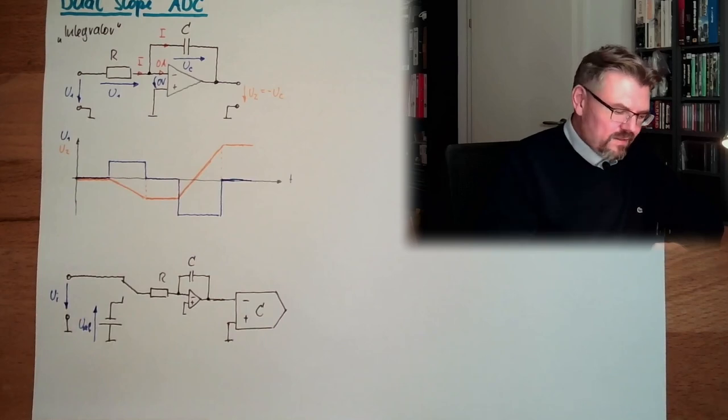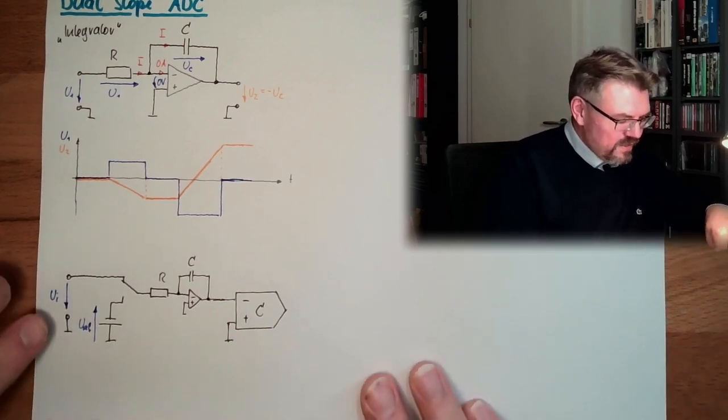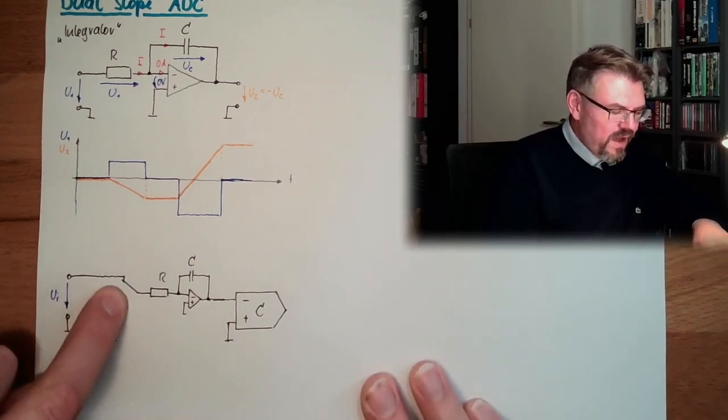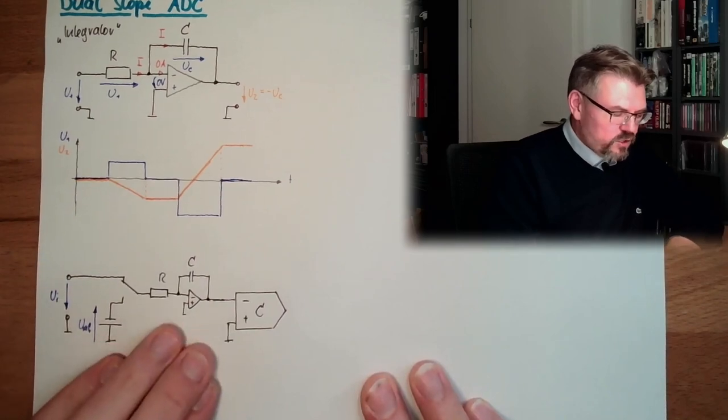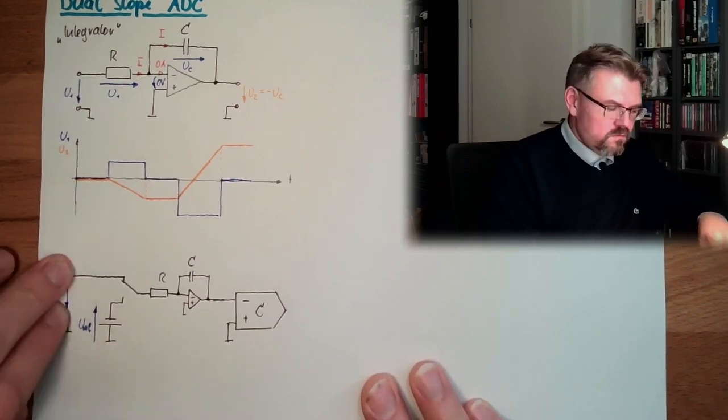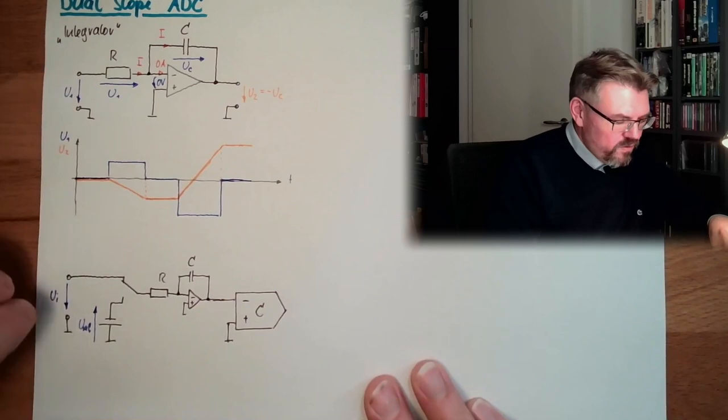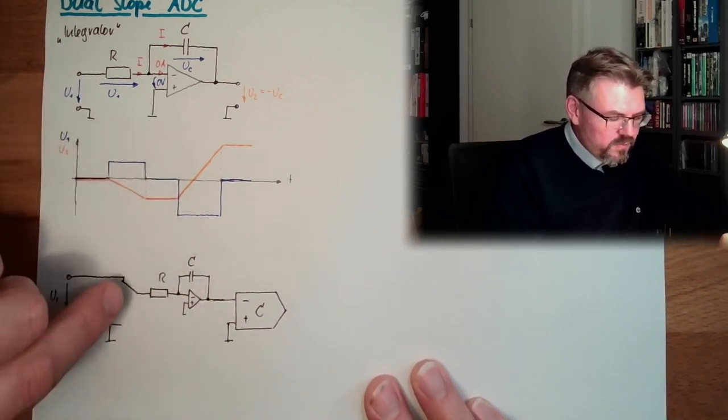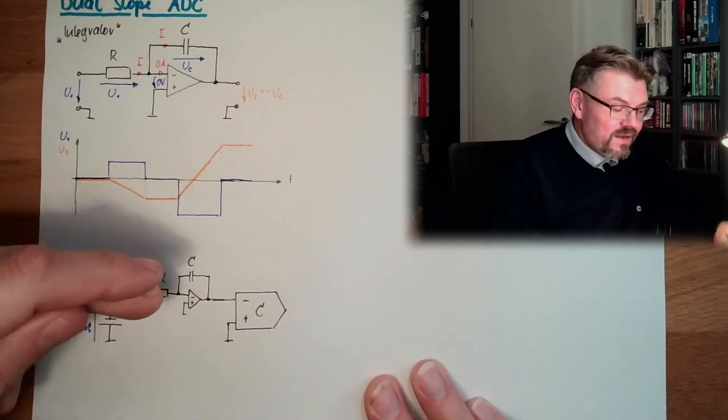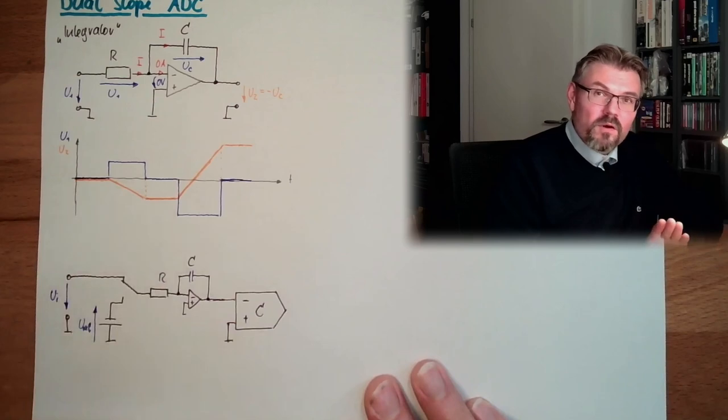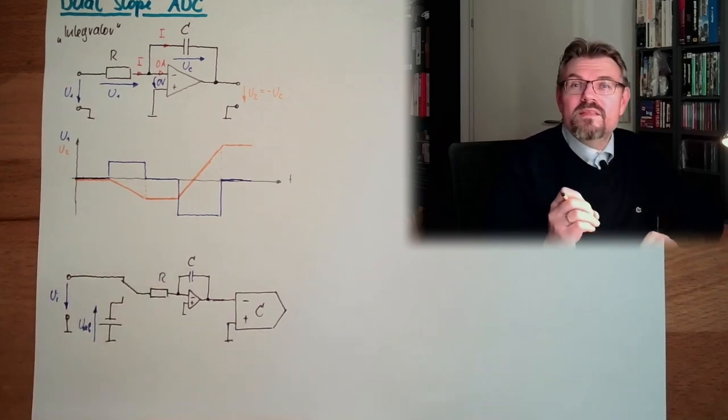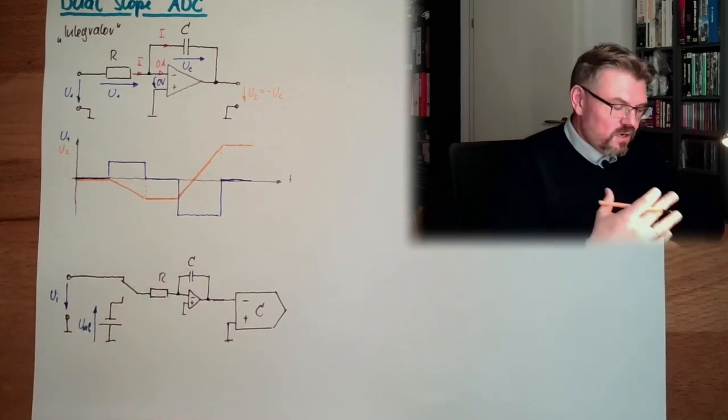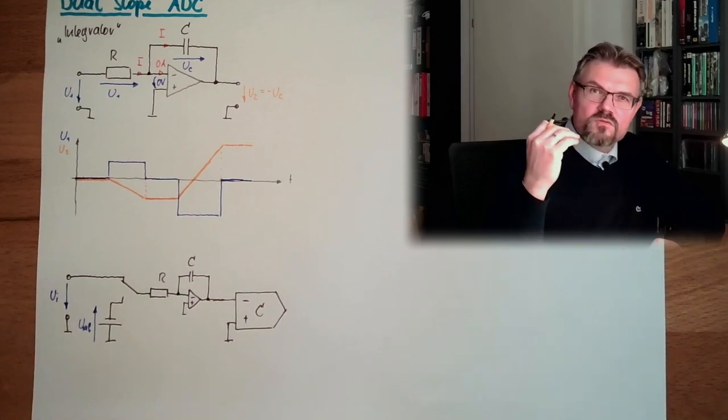What is done actually is that a certain amount of time, this integrator is charged by UI. So we have UI integrated charging going to negative values, and then we switch to a reference value. And then it's discharged. And what we want to find out, how long it takes to discharge our integrator, to bring it to zero.